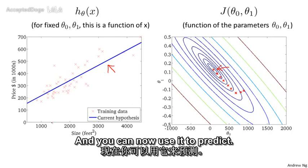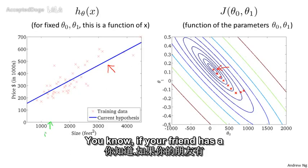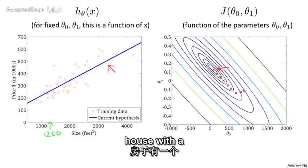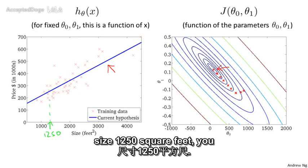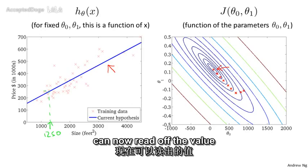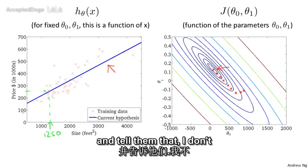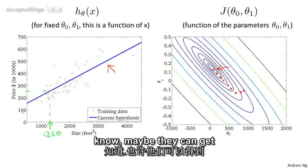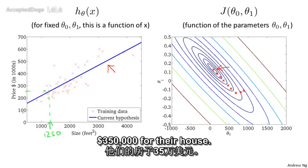So that's gradient descent, and we've just run it and gotten a good fit to my data set of housing prices. You can now use it to predict — for example, if your friend has a house of size 1250 square feet, you can now read off the value and tell them that maybe they can get $250,000 for their house.